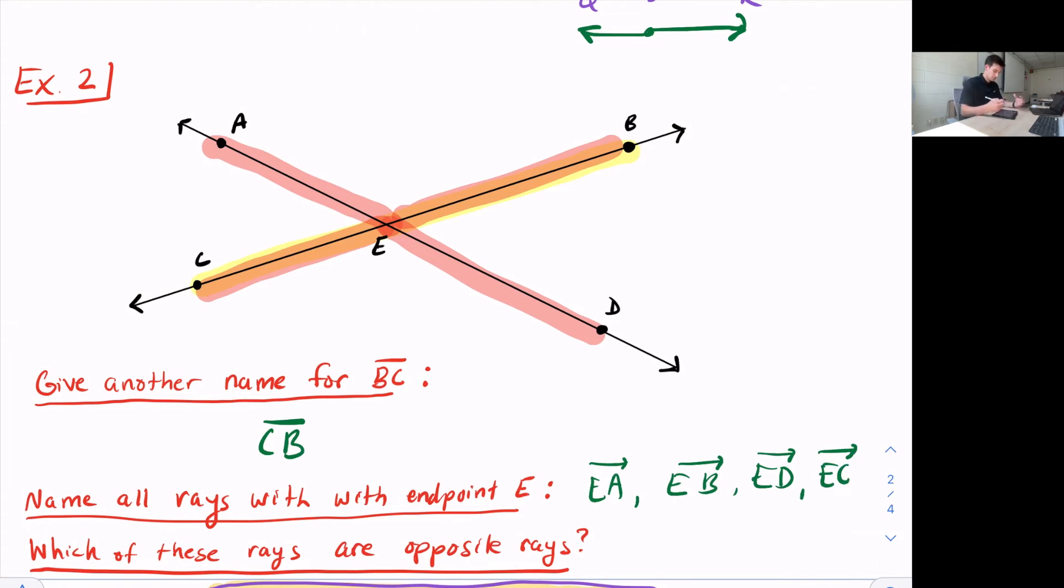Now, which ones of these are opposite rays? So ray EA would be, so here's EA, would be opposite with ED. And then we have ray EB opposite of ray EC. So EB and EC. And those are our opposite rays.